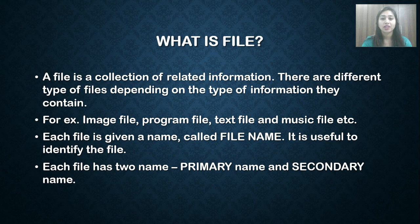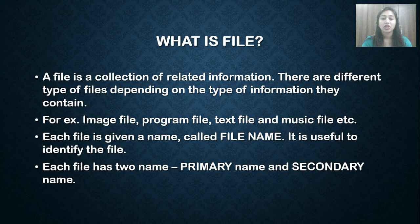First, what is a file? A file is a collection of related information. There are different types of files depending on the type of information they contain. For example, image file, program file, text file, and music file, etc. Each file is given a name called the file name, which is useful to identify the file.